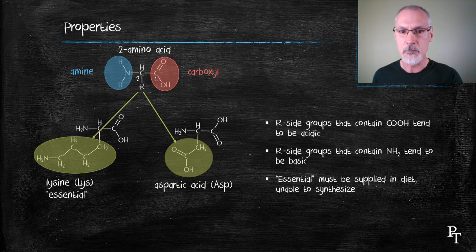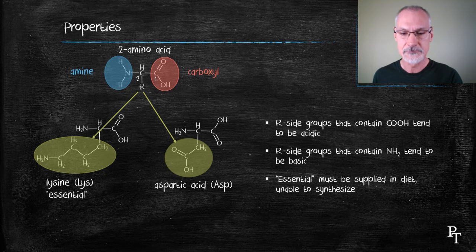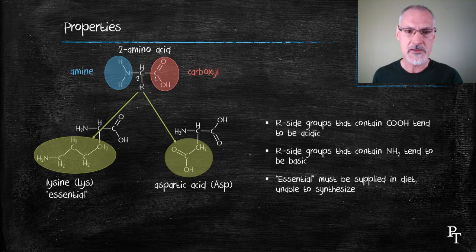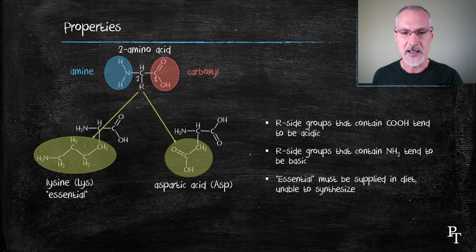Aspartic acid, on the other hand, we are able to synthesize or make that amino acid ourselves. So essential is reserved for those chemicals which we need to get through our diet.